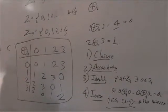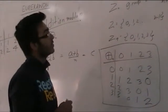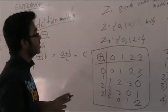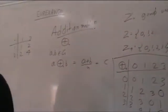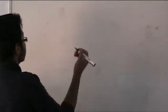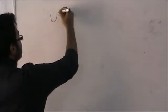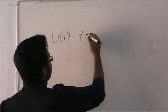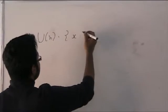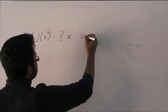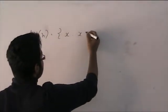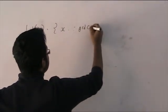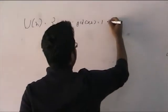This is also something like multiplication modulo n. But for that I will define another group called U(n). U(n) is basically all the x's such that the GCD of x and n is equal to 1, and x is less than n. So GCD of x and n equal to 1 means they are coprime — they don't have any common factor.